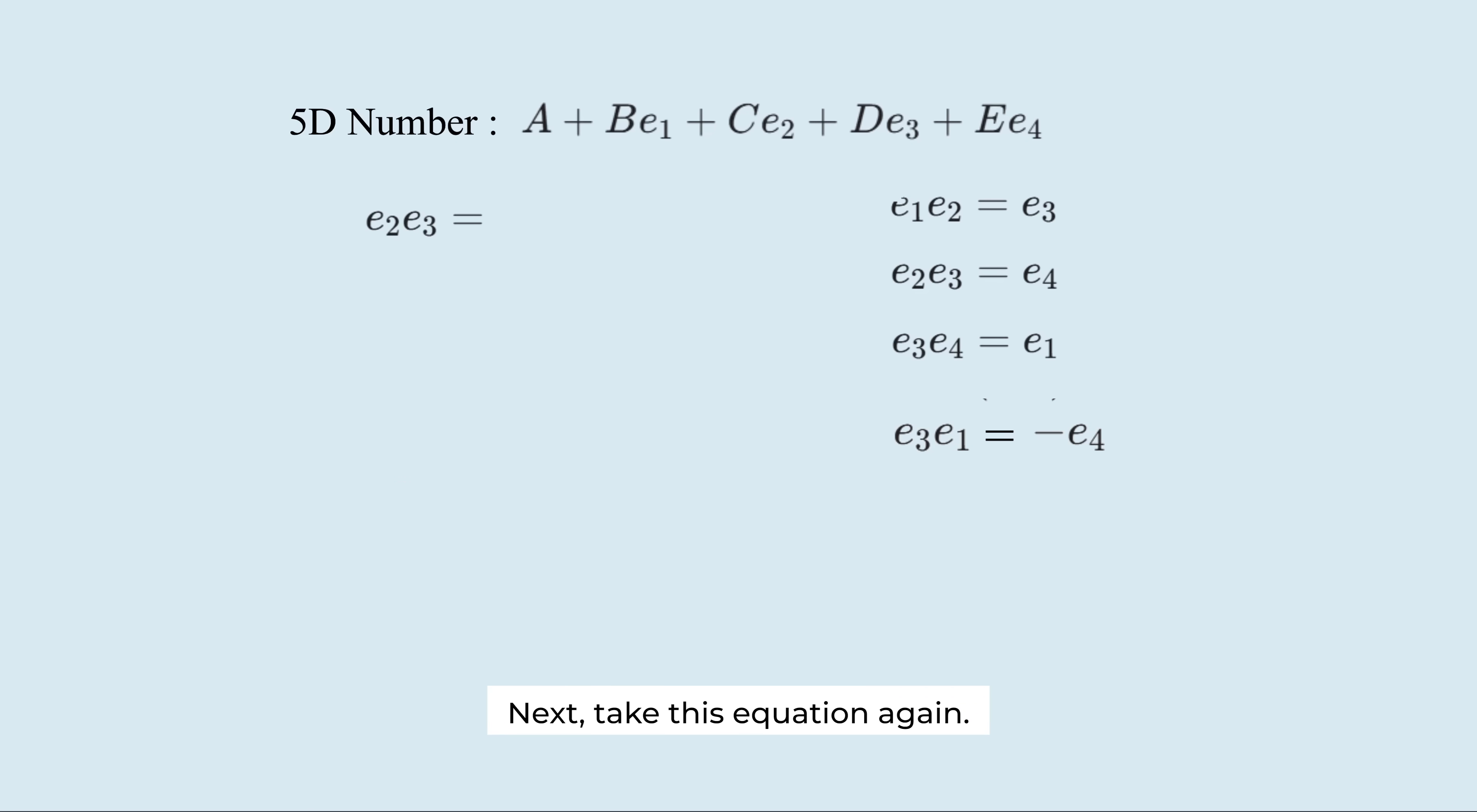Next, take this equation again. Multiply both sides by E1. We get E1 times E4 equals minus 1. So far, we've derived these relations, right?